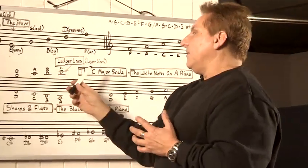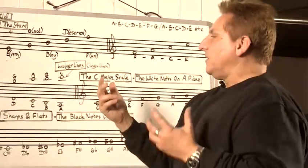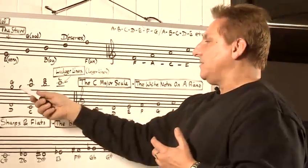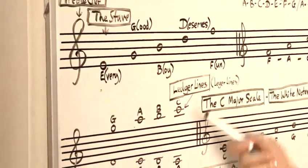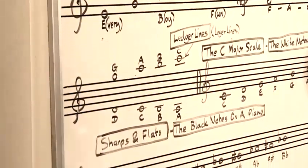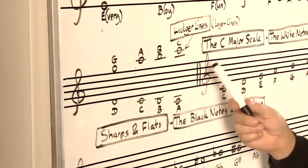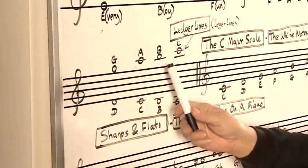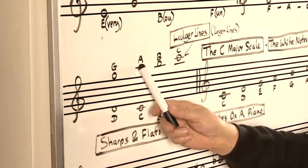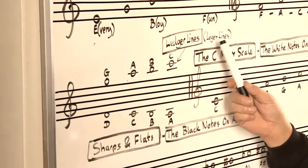Now obviously that's not enough notes for most things, so you go above and you go below. When you go above or below, you have to use these little lines here, which are called ledger lines.